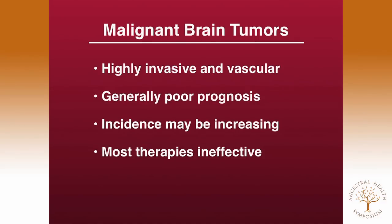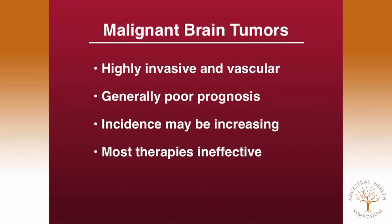I'd like to talk now a little bit about brain cancer specifically. These are highly invasive and vascularized tumors with generally poor prognosis. Incidence may be increasing through cell phone use, but this is only for individuals who might be susceptible. Unfortunately, most therapies for brain cancer are ineffective in managing the disease. Two major categories: primary and secondary brain tumors. Glioblastoma is a primary brain tumor — one of the worst, with very poor survival after five years. About 22.5% of all cancer deaths come from metastasis, the movement of cancer cells from some other organ to the brain.